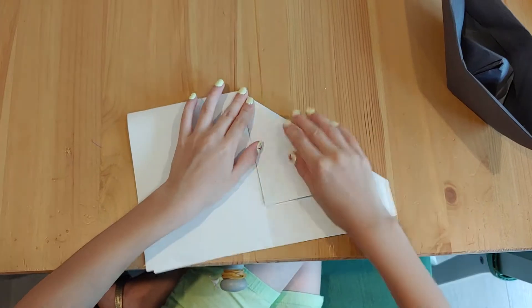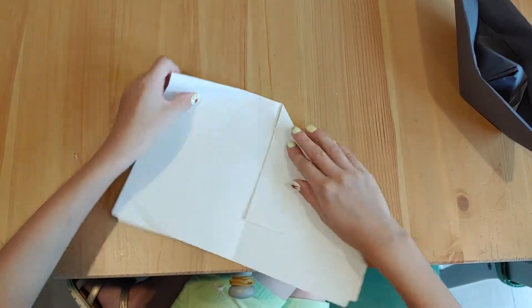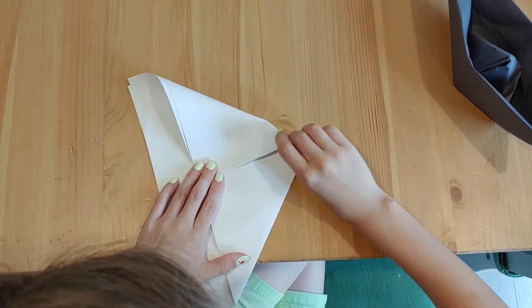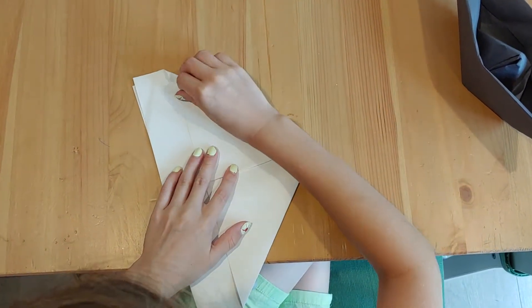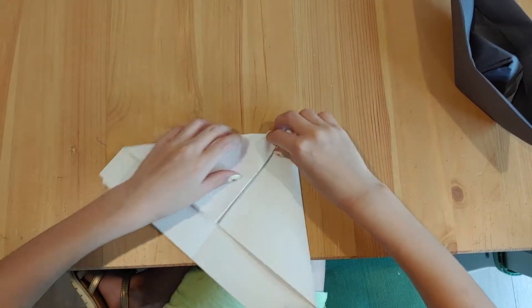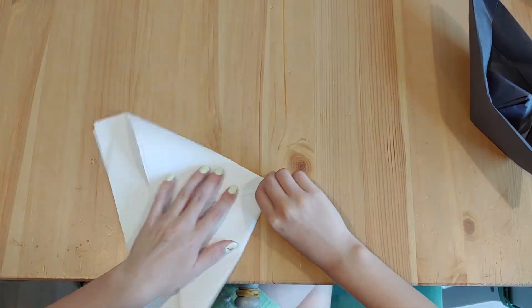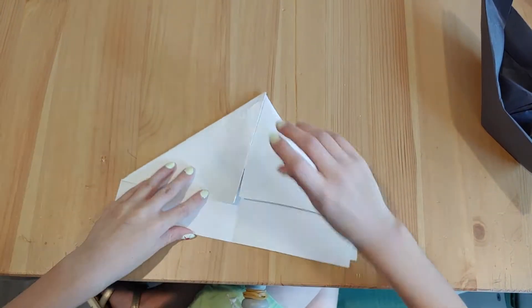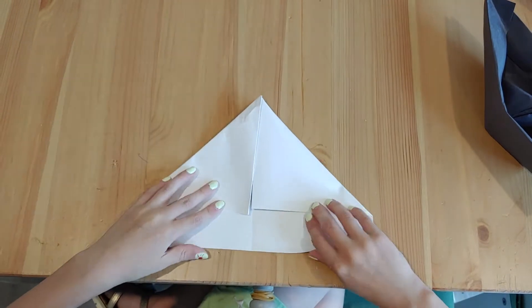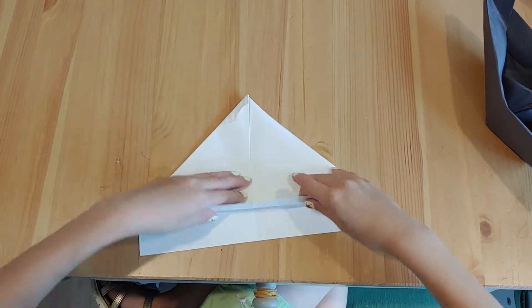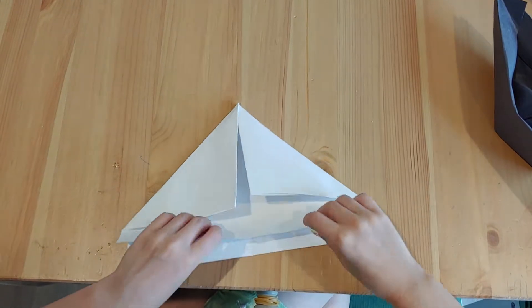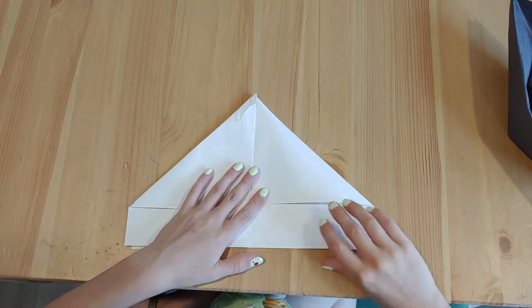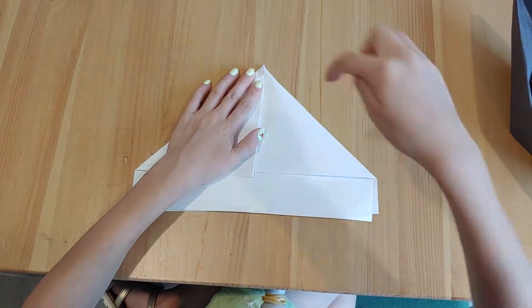Then you do the same thing on the other side. You should have two little flaps, one here and one here. So when you put it like a card, you should have folded it so it's facing downwards, so you would have these two little flaps.